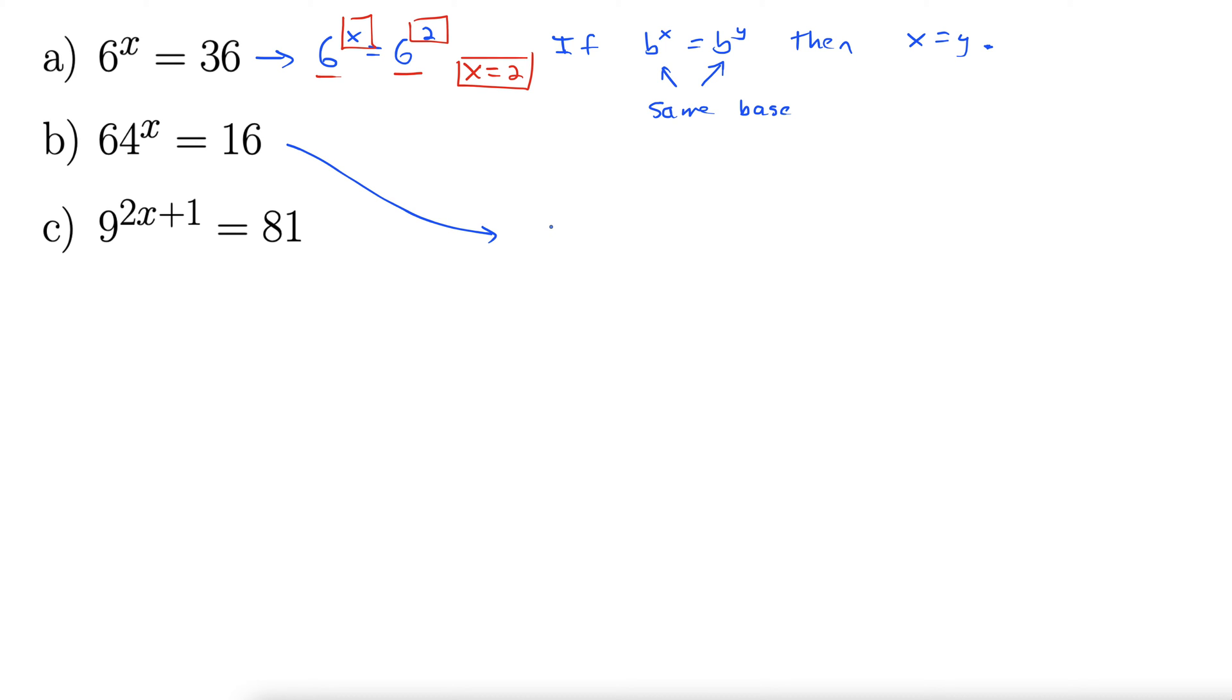Let's see, 4 times 4 is 16, 4 squared, times 4 again is 64. So 64 is actually 4 cubed. Alright, so let's write it that way. 4 cubed to the x, and then 16 on the right-hand side is 4 squared.